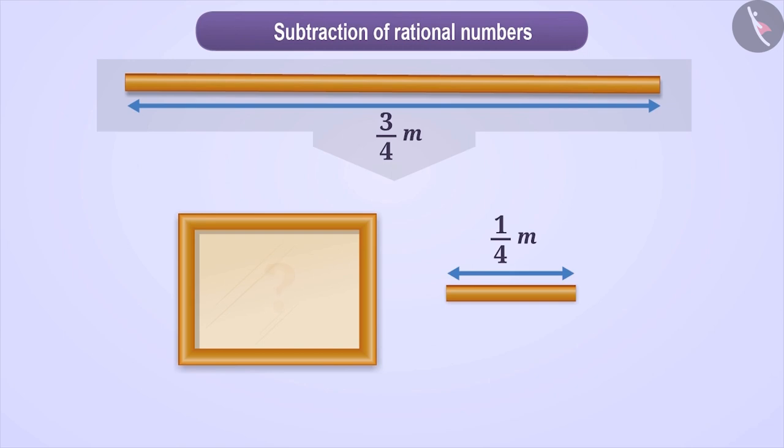Absolutely correct. You must subtract 1/4 meter from 3/4 meter. That is, here you have to subtract 2 rational numbers. So let's find out how to perform this calculation.